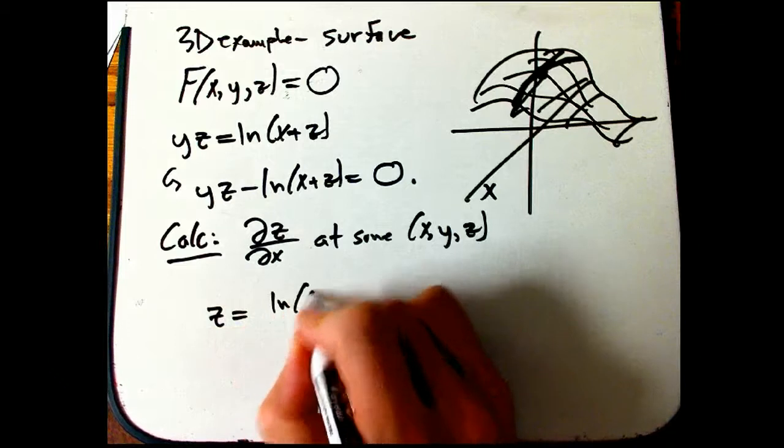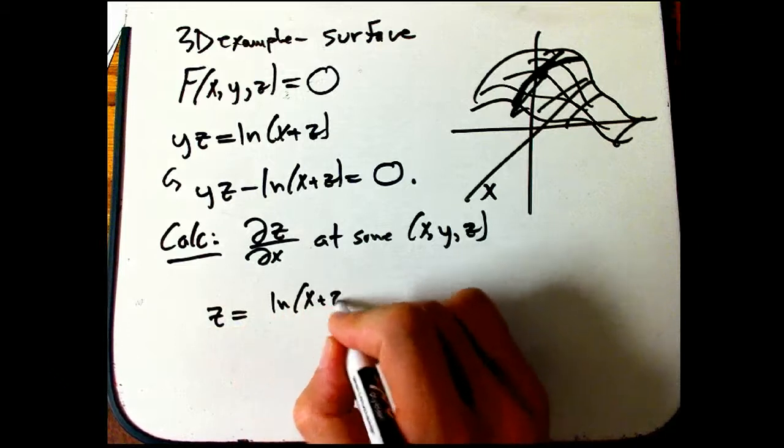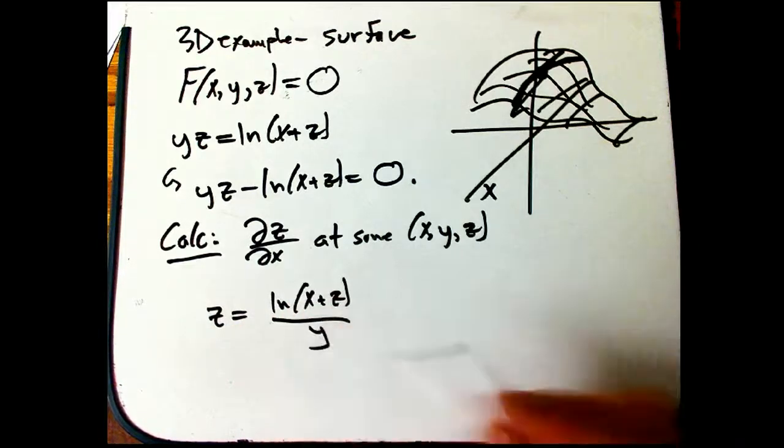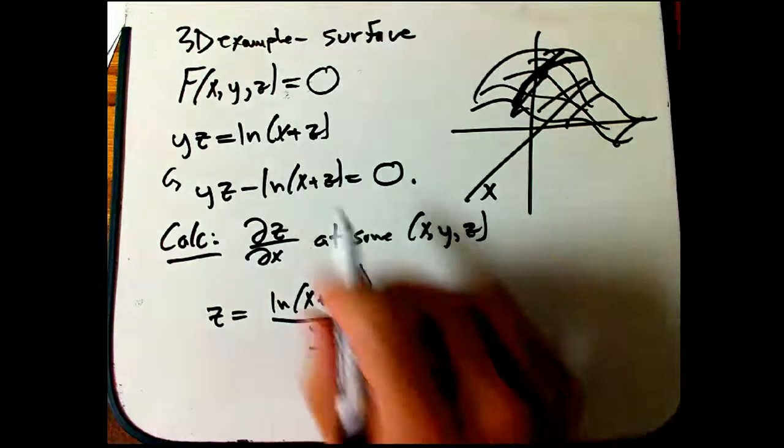Well, z is going to be ln of x plus z over y. Oh, that's got a z in it. Darn it. We haven't isolated the z. Well, let's move everything over.